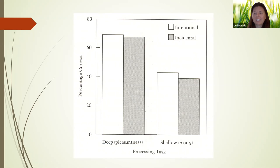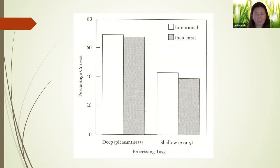On the other hand, when asked in a shallow way — like 'do these words have the same typeface?' or 'does this have an A or Q?' — memory overall goes down to about 40% correct. Comparing about 70% correct to 40% correct is a very decent difference for a relatively simple task. You can imagine that when you complicate things, the differences probably just get bigger.